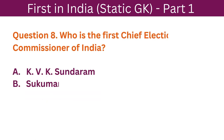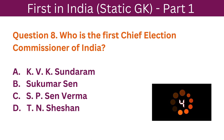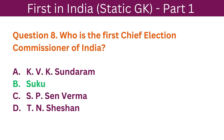Question 8: Who is the first Chief Election Commissioner of India? A. K.V.K. Sundaram. B. Sukumar Sen. C. S.P. Sen Varma. D. T.N. Seshan. The correct answer is B. Sukumar Sen.